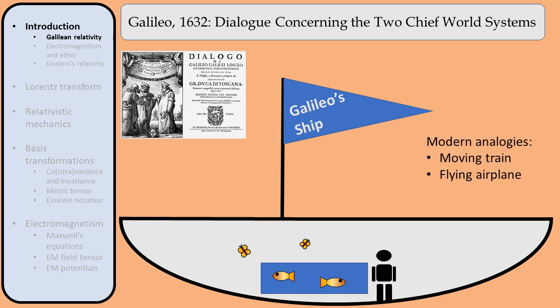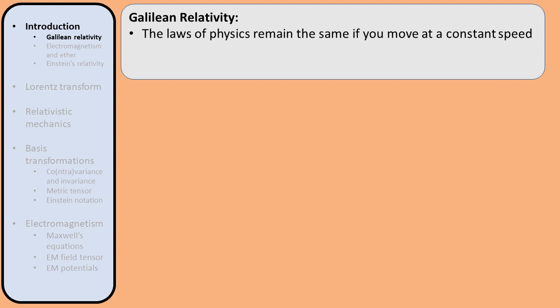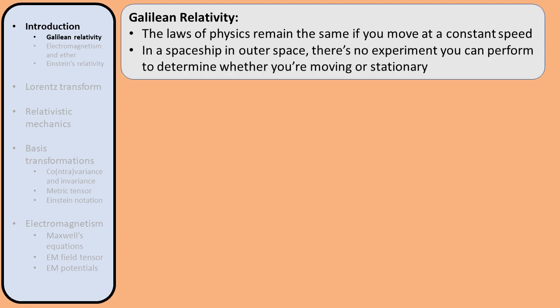In modern times, you can imagine being on a moving train or a flying airplane. As long as the train or plane travels smoothly and with a constant velocity, everything inside it moves the same way as if the train or plane were standing still. This principle is nowadays known as Galilean relativity. It says that inside a system that moves with a constant velocity, the laws of physics are the same as if you were standing still. In fact, it means that in the absence of a fixed reference point, it's impossible to tell whether you're moving or stationary.